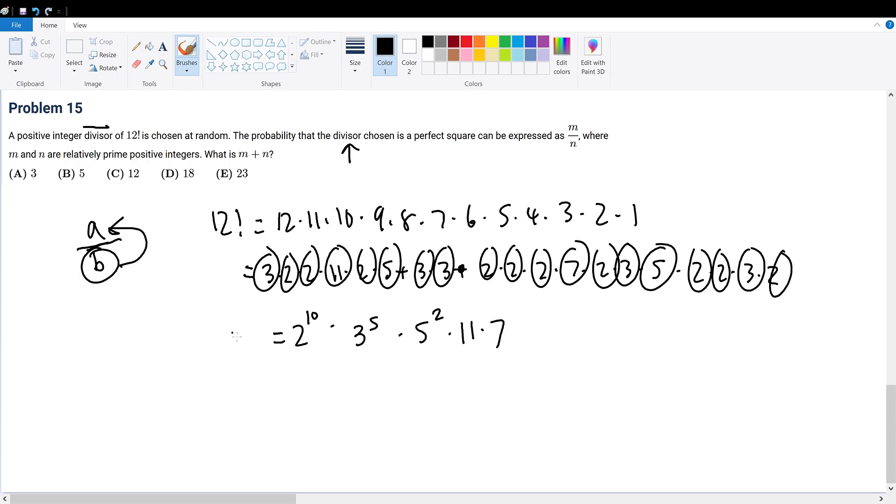Now from this, which is equal to 12 factorial, how many factors does 12 factorial have? There's a little trick. Now that we have found out the prime factorization, let's first see its powers. So 2 to the 10th power, 3 to the 5th power, 5 squared, 11 first, and 7 to the first power.